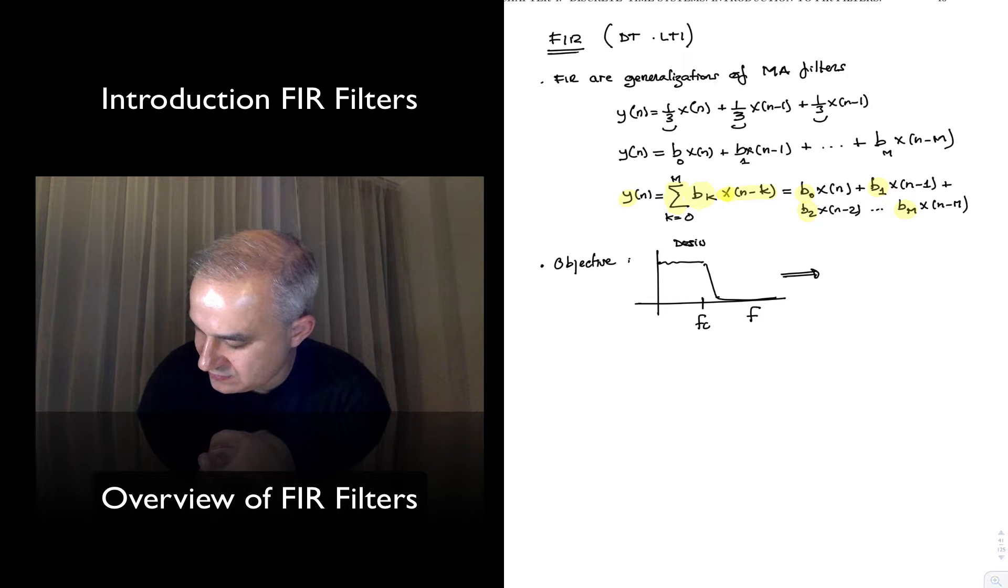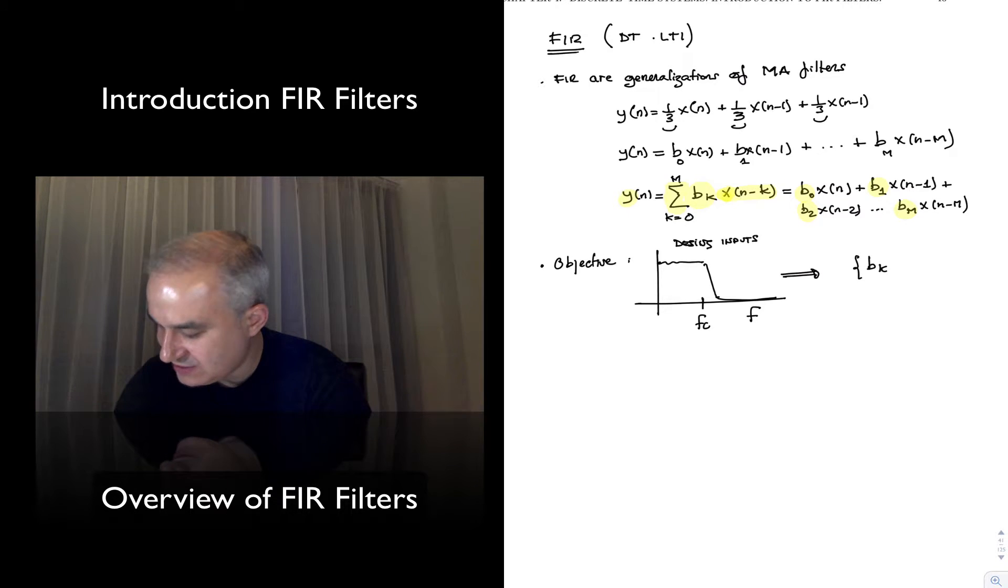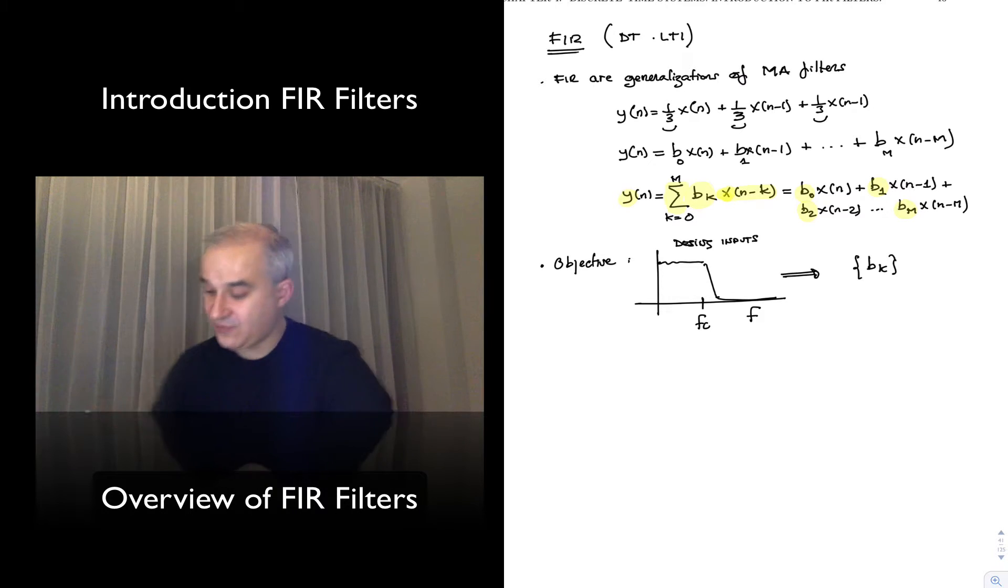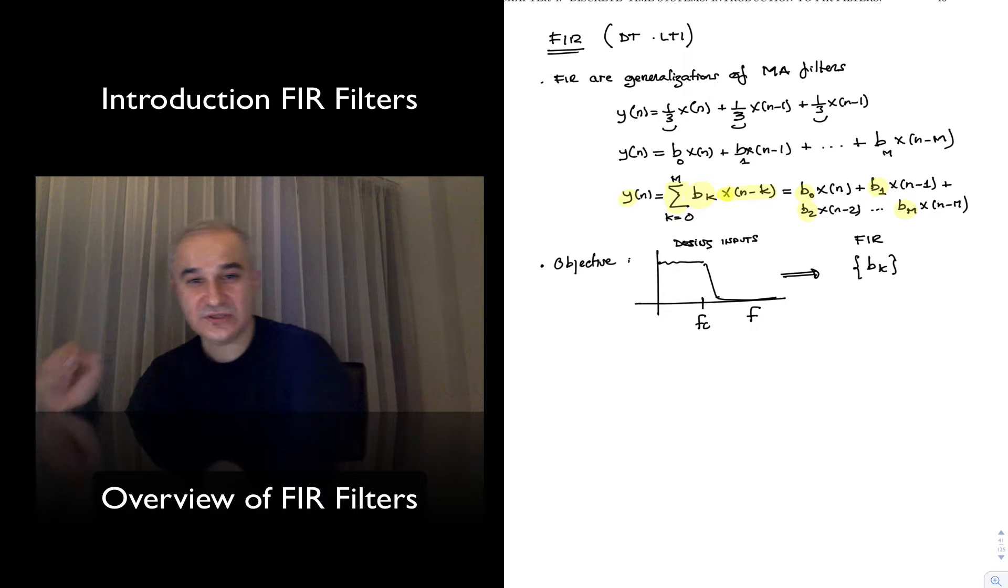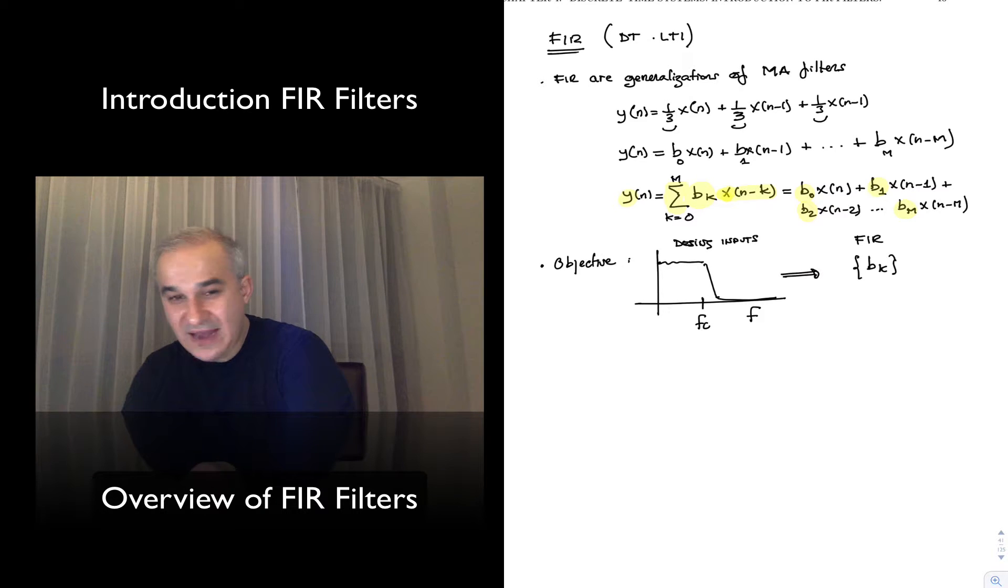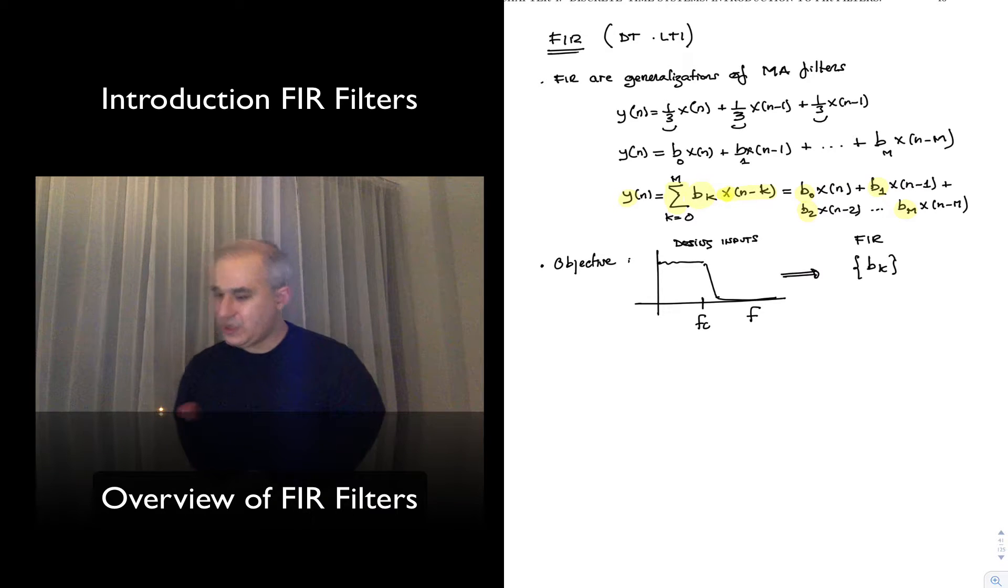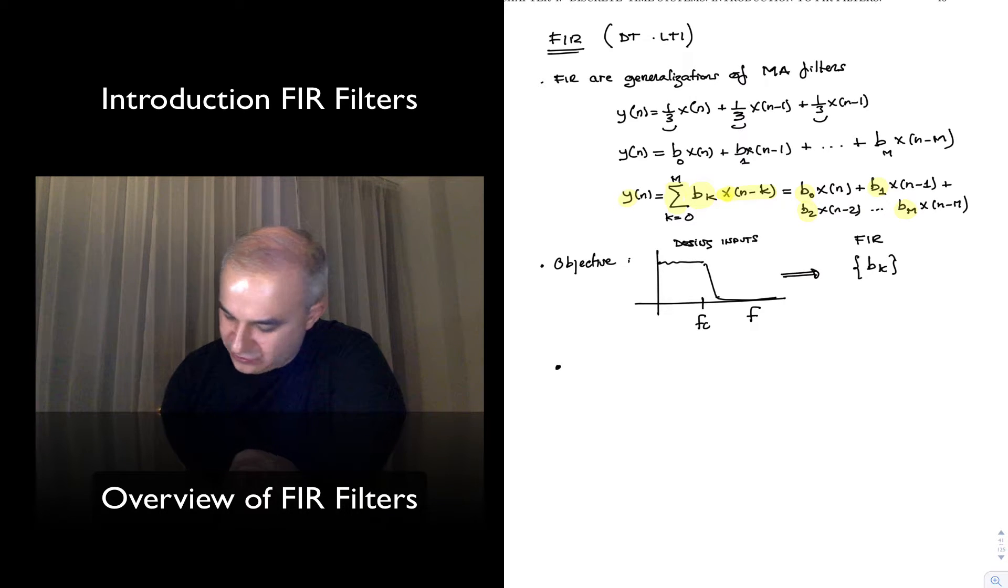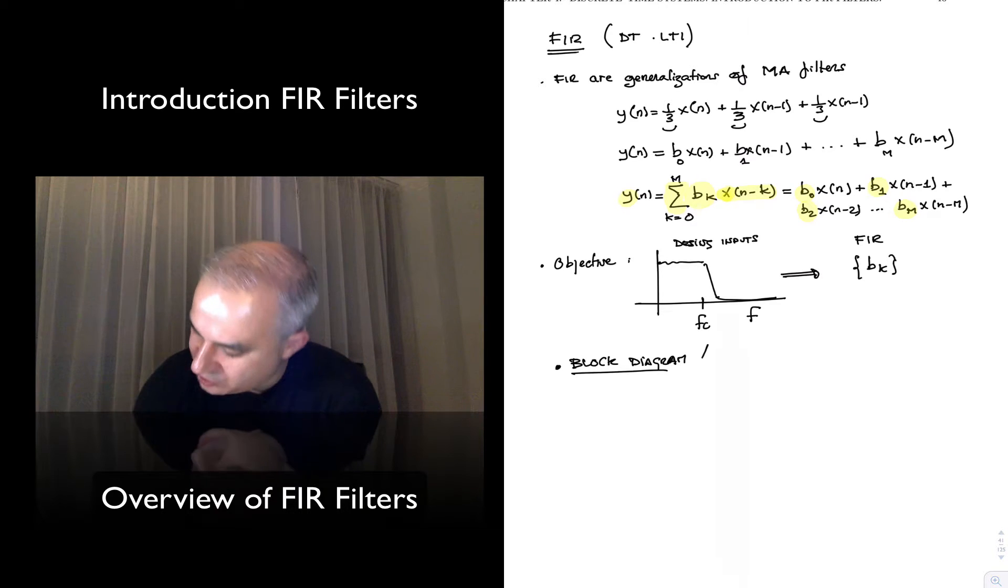So going from a frequency response specification, like this cutoff frequency, this pass band, this stop band, this much attenuation, the problem of filter design is from these specs, design inputs, to generate a set of BK coefficients. What are the BK coefficients? The filter coefficients, the FIR filter coefficients. And what is remarkable is that you can implement any frequency response with this difference equation, with this type of filter, which is very stable and very easy to implement. So in terms of a block diagram, what are the mathematical operations that we need to implement this, what are the building blocks, if you will?